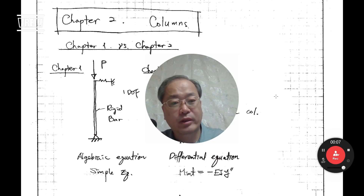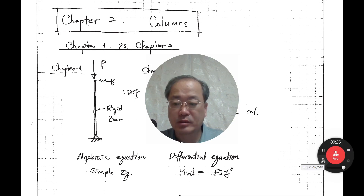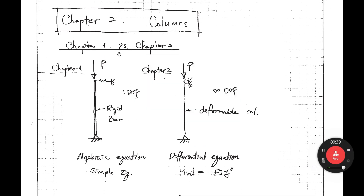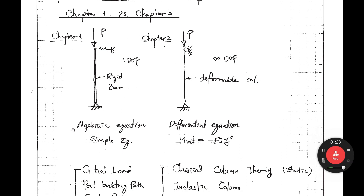From today I will give a lecture regarding the column chapter two. I spent three weeks to cover columns. You have already learned chapter one; now you will learn chapter two. In chapter one we have the rigid bar, so we consider just one spring — we make a real column into a simple column with a rigid bar. There is no deformation on this member. To solve this problem you use simple algebraic equations, equilibrium equations.